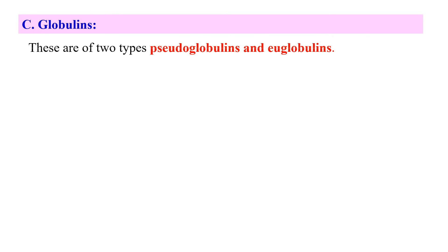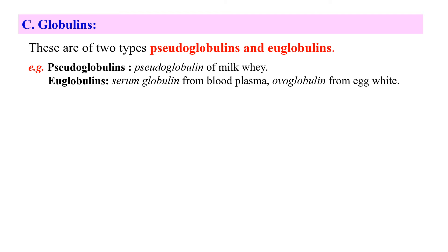Next, globulins. There are generally two types of globulins: seroglobulins and euglobulins. Euglobulins are more widely distributed in nature than seroglobulins. Seroglobulins are soluble in water while euglobulins are insoluble in water. Examples: seroglobulins include seroglobulin from milk whey, while euglobulins include serum globulin from blood plasma and ooglobulin from egg white.